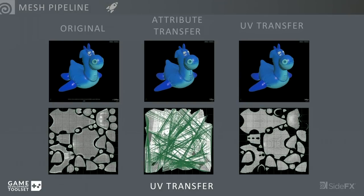Another mesh pipeline addition is UV transfer. This is something we've run into problems with — there's an attribute transfer node in Houdini but it doesn't do a great job of transferring UVs. If you have two meshes identical in shape but different in UV layout, you often get a mess. We've figured out the logic behind that, and now you are able to transfer UVs from one object to another, which is really going to help with the mesh pipeline.